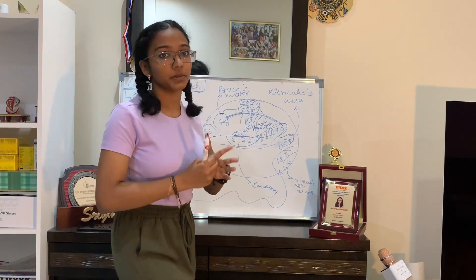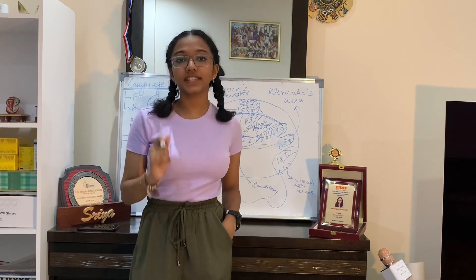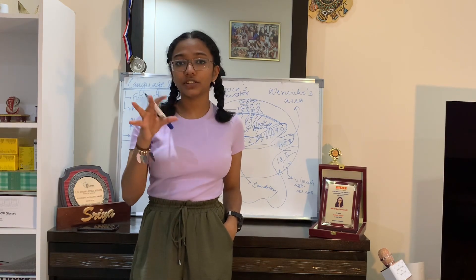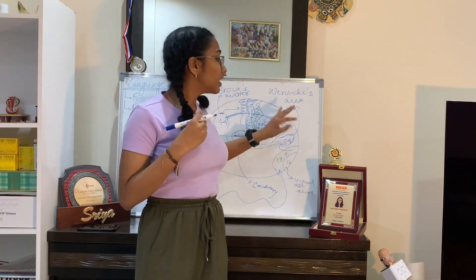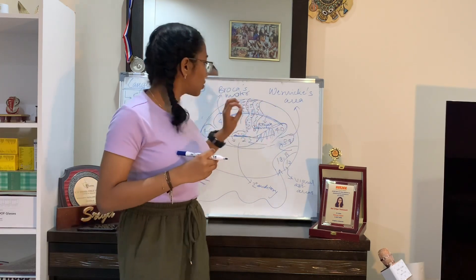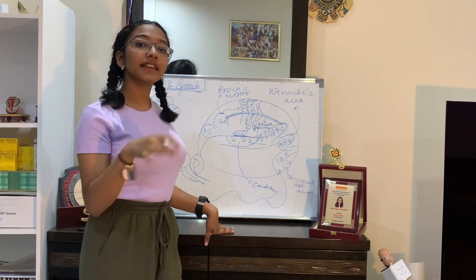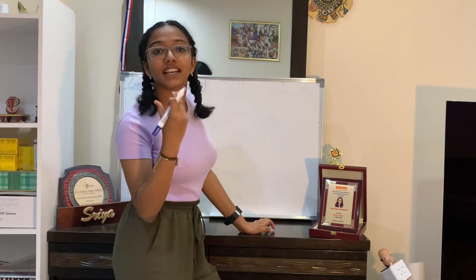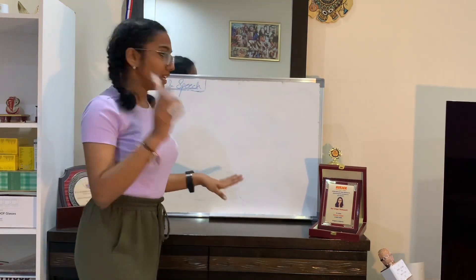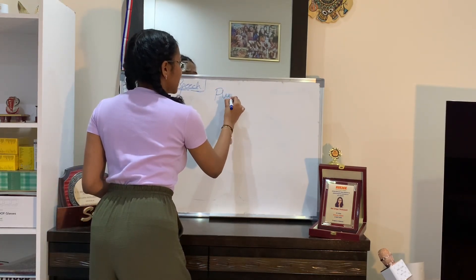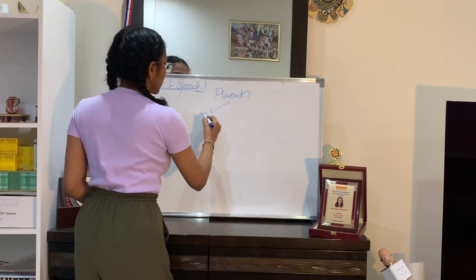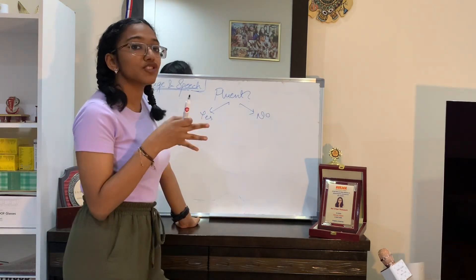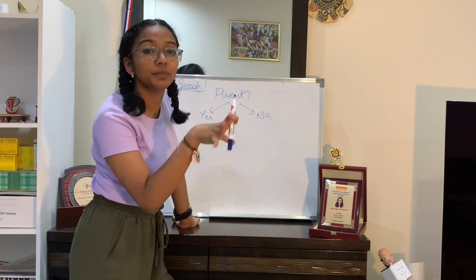Now let's talk about lesions in these areas caused by stroke, trauma, or injury, which render them non-functional. These result in a group of diseases called aphasias. To classify aphasia, we ask a few questions. The first: is the person's speech fluent? If not, it is mostly a motor area lesion — typically Broca's area.